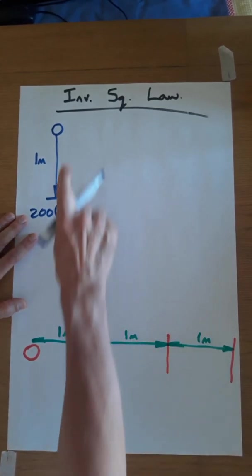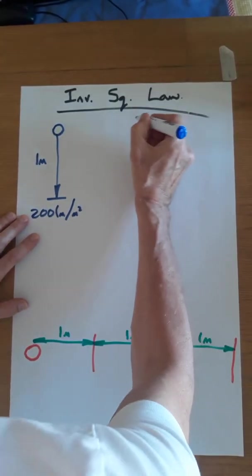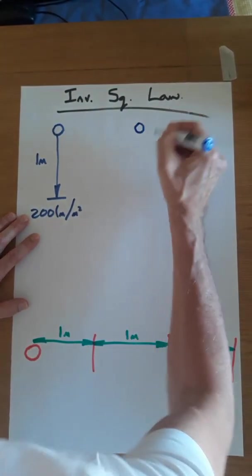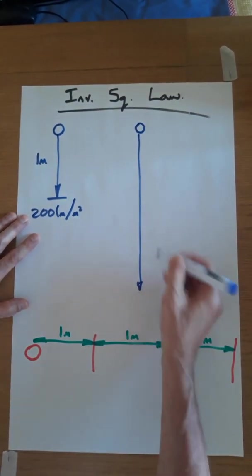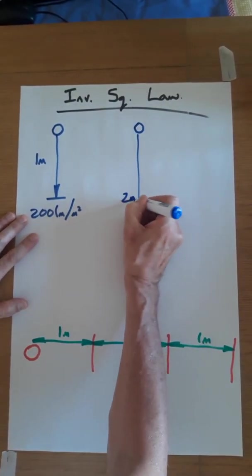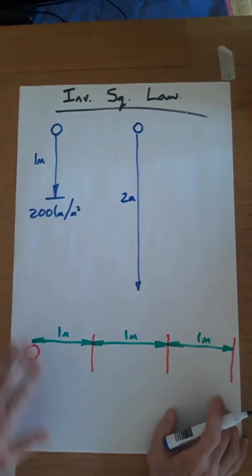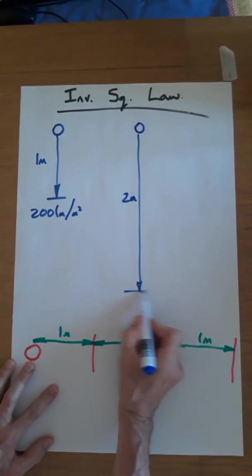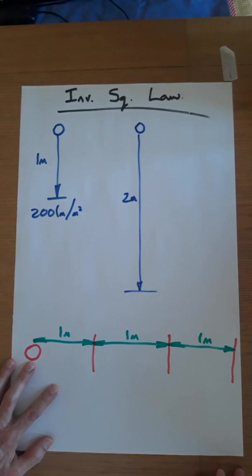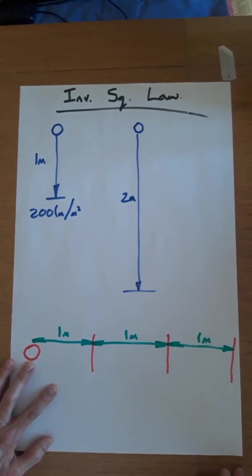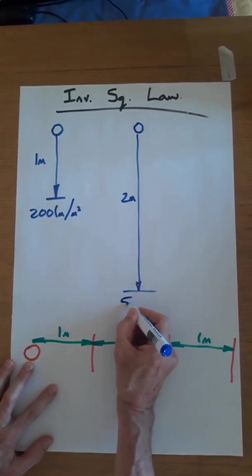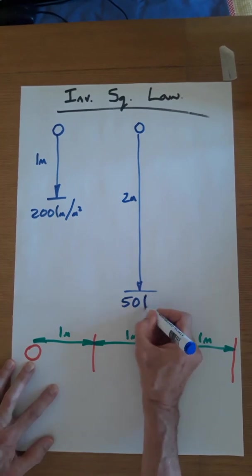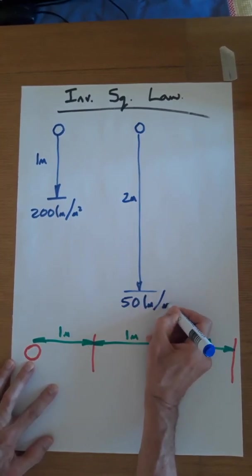So if we took the same lamp and we made it travel two metres, then the amount of illuminance on the surface will reduce by a quarter. It's going to be only 50 lumens per square metre.